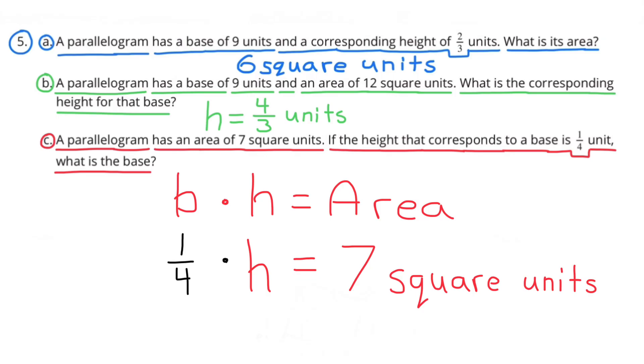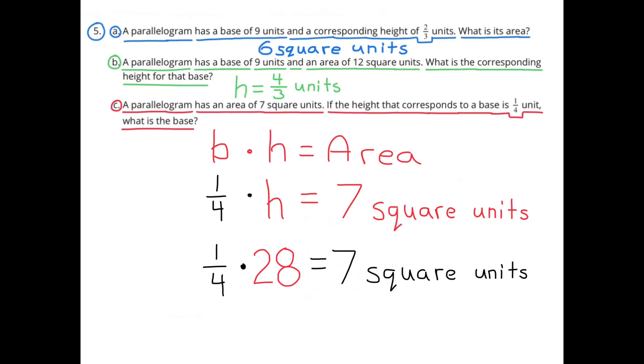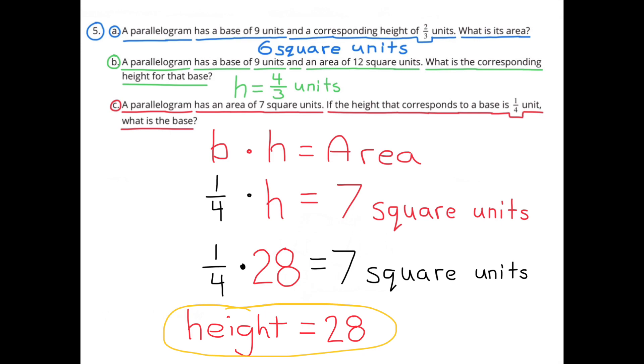Seven divided by one-fourth equals twenty-eight. So one-fourth times twenty-eight equals seven. We know that the height is twenty-eight units.